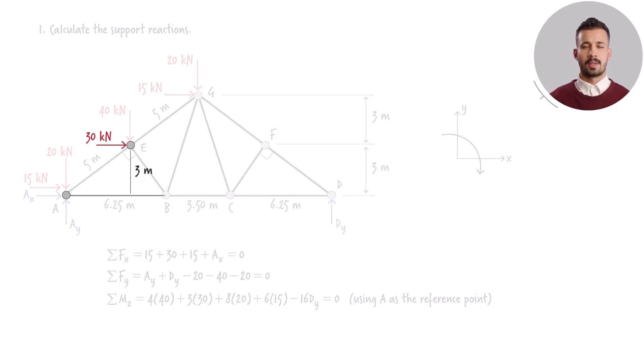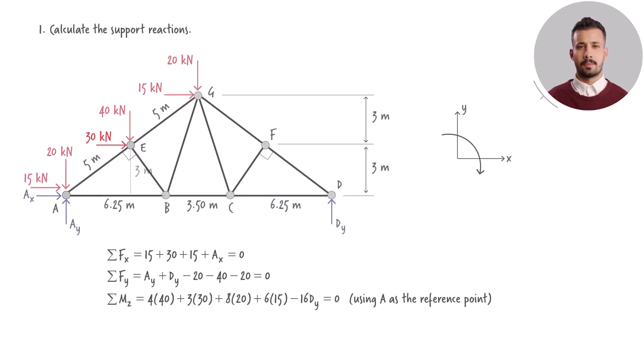The load of 30 kN, acting through a moment arm of 3 m, generates a clockwise moment at point A. Consequently, this results in a positive moment of 3 times 30 kN.